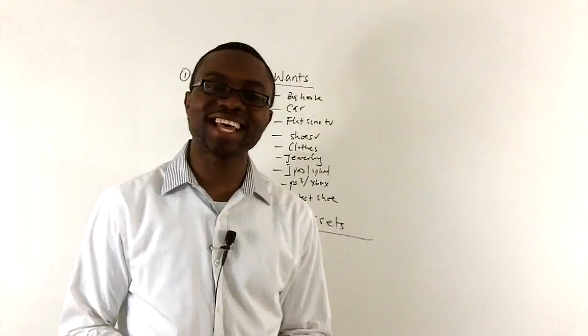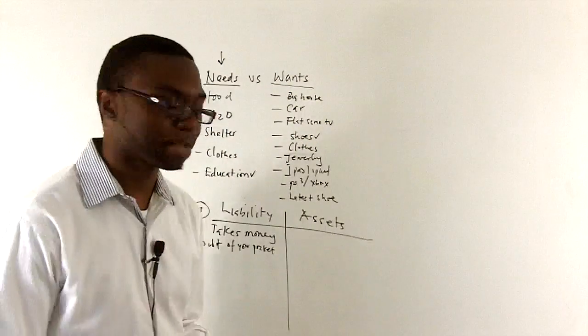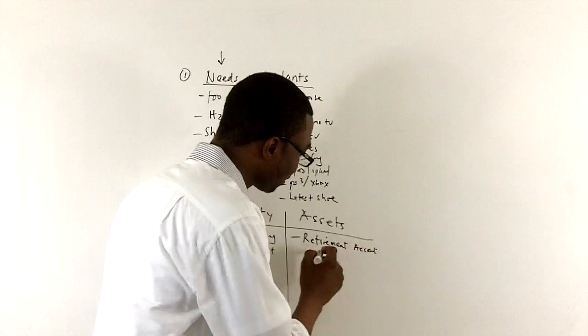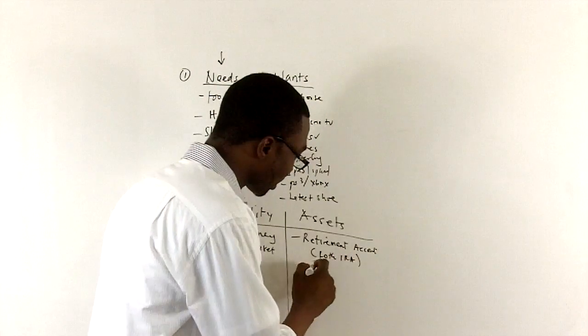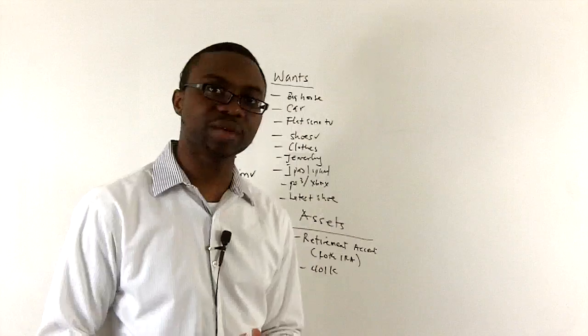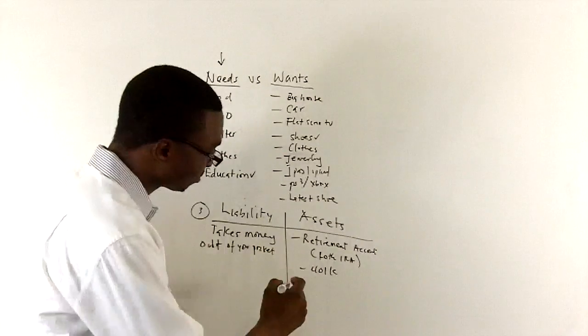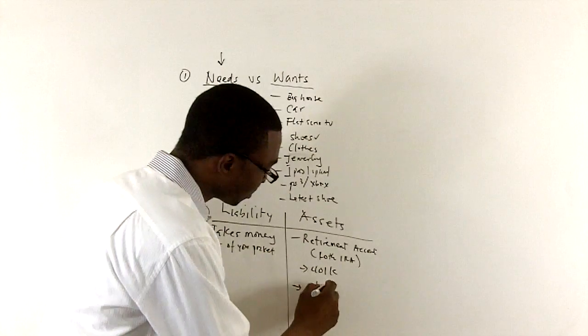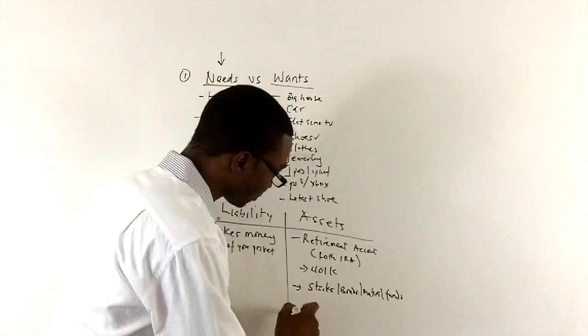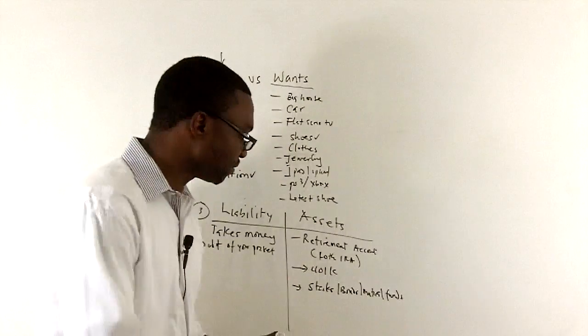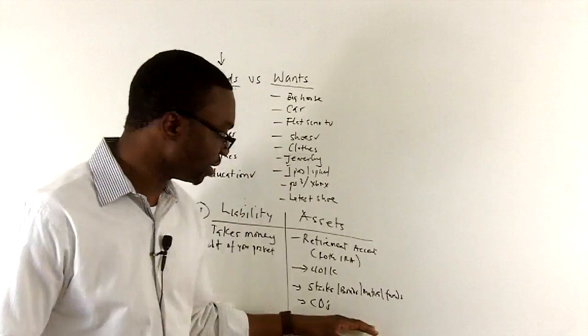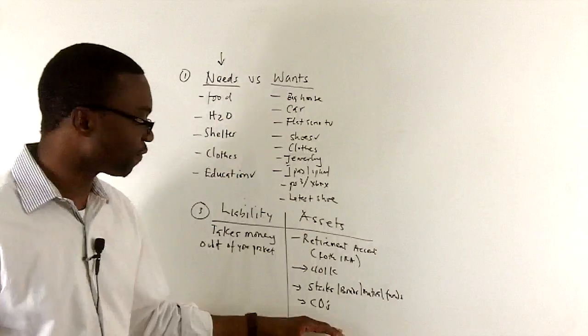Now, assets is anything that puts money in your pocket. There's different kinds of assets. People have retirement accounts called Roth IRAs or 401Ks. That's something that you put money in and over a longer period of time, it will accumulate wealth for you because by the time you retire, you can take that money out. Now, you can buy stocks, bonds, mutual funds. These are all things, even CDs, savings account that has a very good interest rate that can get you more money, allowing your money to work for you.